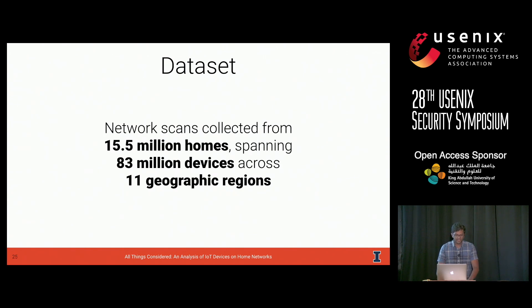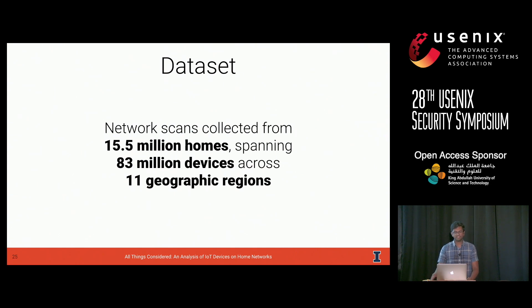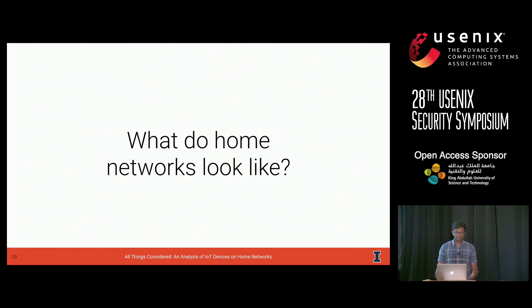This brings us to our final data set. In total, our data set consists of internal network scans collected from 15.5 million homes across 83 million devices and 11 geographic regions. This puts us in a great position to answer the first question: what do home networks actually look like?